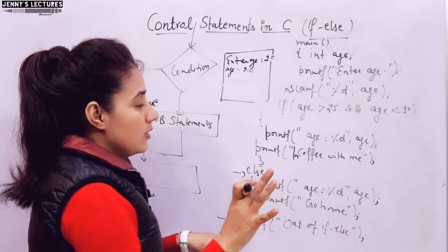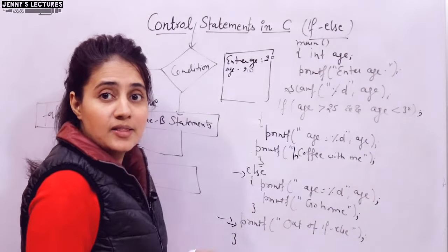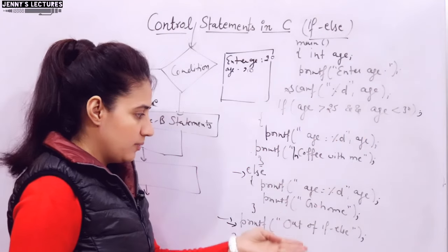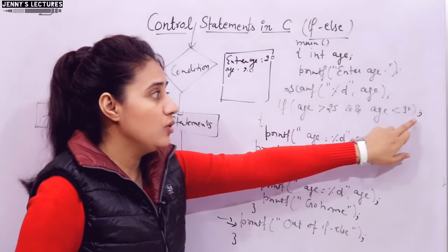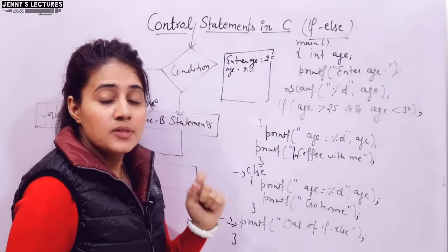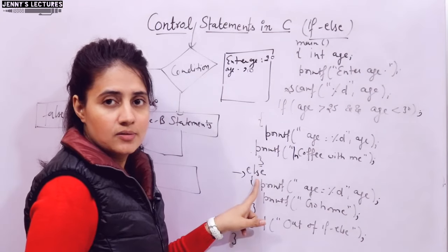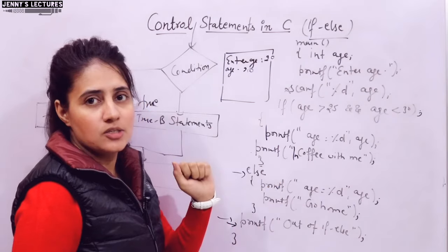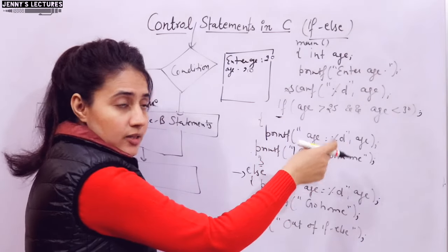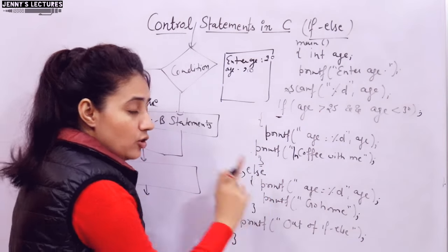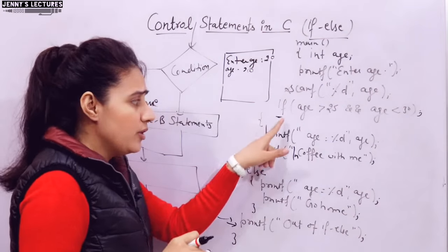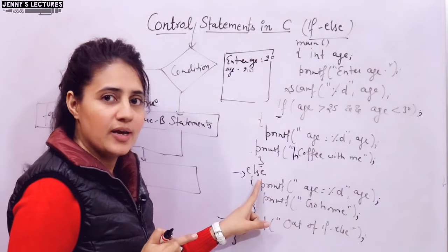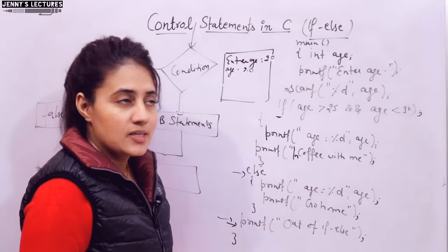Common error: if you write a semicolon after the if condition, you terminate the if statement. Then when the compiler encounters 'else', it has no associated 'if', causing an error — 'misplaced else' in Turbo C, or 'else without previous if' in Visual Studio. Remember: without if you cannot write else, but without else you can write if — else is optional.